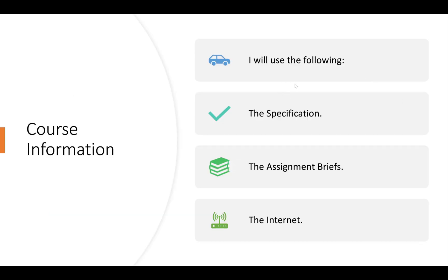I'll be using the specification — a document given to us by Pearson's — which contains every single piece of information we could potentially cover. It goes beyond what everyone needs to know, but it's a great starting point. You really don't need the internet until you've looked at the specification, because it lists every single item you can speak about and need to research. I'll upload this to my Google Drive and share the link in the description.